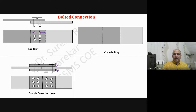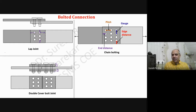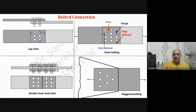Then we have chain bolting. In chain bolting, the center-to-center distance between bolts in the direction of stress is the pitch. Perpendicular to the direction of stress, the center-to-center distance between bolts is the gauge. The distance from the center of the bolt to the end of the plate is the end distance (in the direction of stress), and perpendicular to stress we have the edge distance.